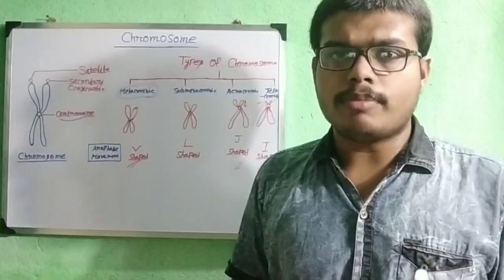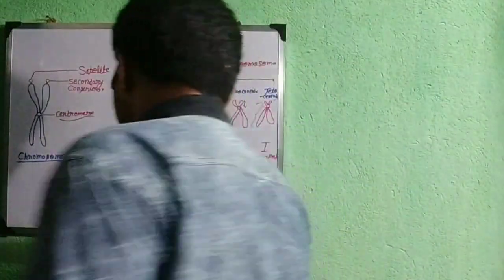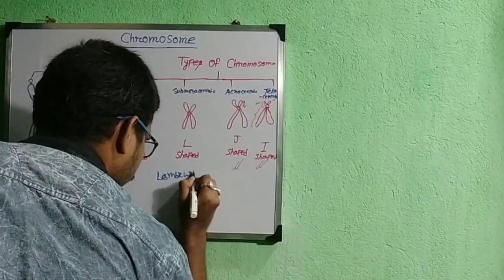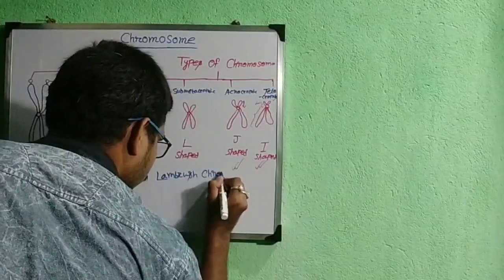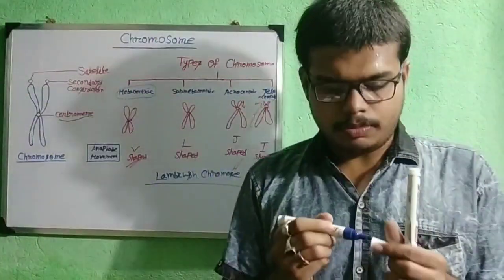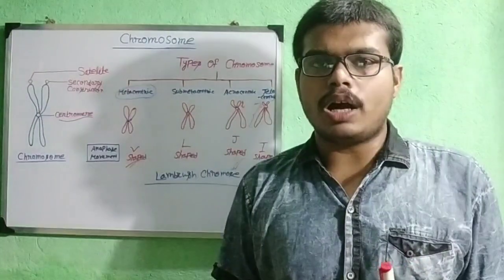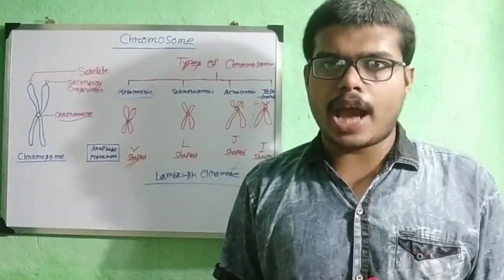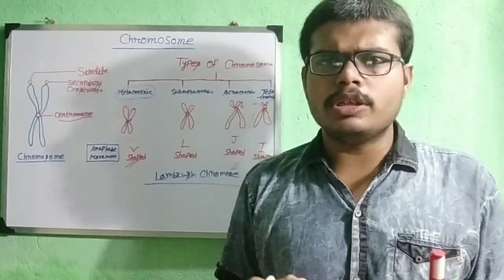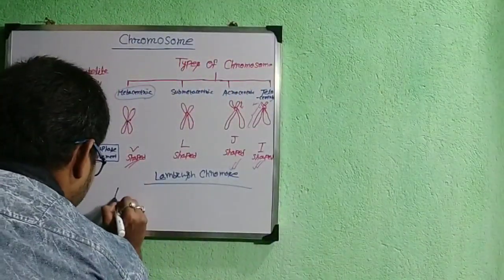Now I will discuss about some special types of chromosomes. One of these is the lampbrush chromosome. This lampbrush chromosome is a specialized type of chromosome. Usually it is found in the oocytes of vertebrates and invertebrates. These are large-size chromosomes. Remember that the lampbrush chromosome is a large-size chromosome.